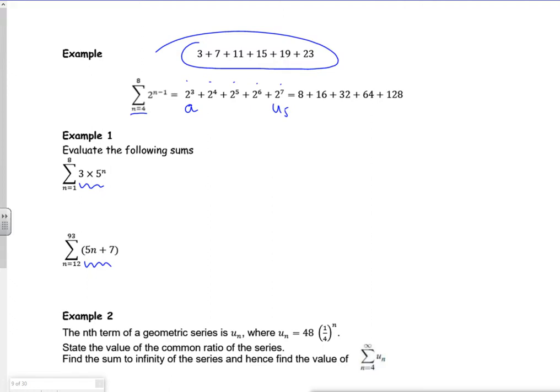This is carrying on with the sigma notation, the stuff from lesson three, because it started off with sum to infinity at the end of that last example.